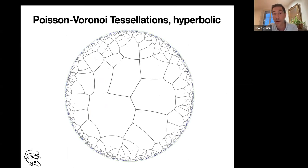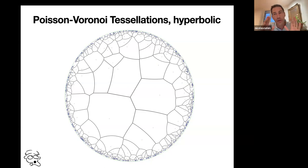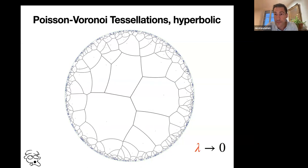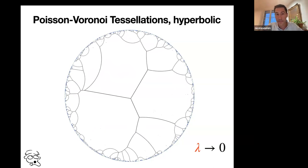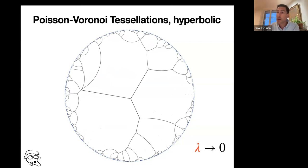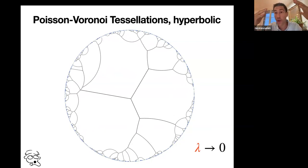But let's do the same in the hyperbolic plane. There are no dilations in the hyperbolic plane, but there is a way to produce the same thing — I will come back to that later. The movie you will see is a coupling of a PPP with intensity lambda as lambda goes to zero. You see all the blue points of your PPP go away — they go to infinity on the boundary. But for the Voronoi tessellation, something remains. You still see the boundaries; they do not vanish or escape to infinity. When all points have been sent to infinity, there is some random object that remains on your hyperbolic plane. This is the object we want to study.